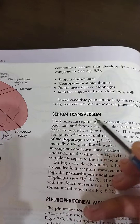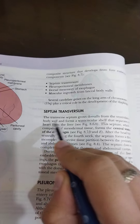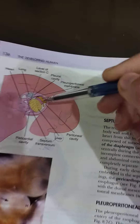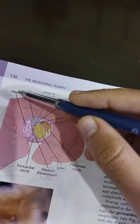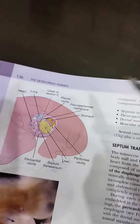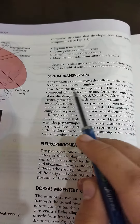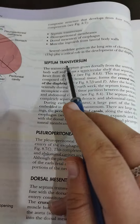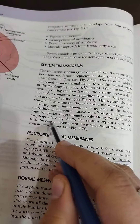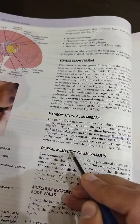First, we come to the septum transversum. The septum transversum is a semicircular shelf which separates our heart from the liver. It forms the central tendon of the diaphragm. The septum transversum expands and fuses with the dorsal mesentery of the esophagus and with the pleuroperitoneal membrane.